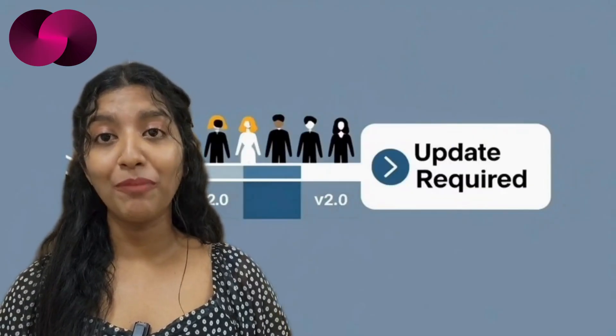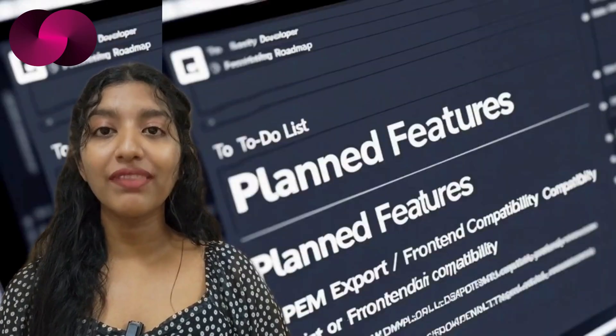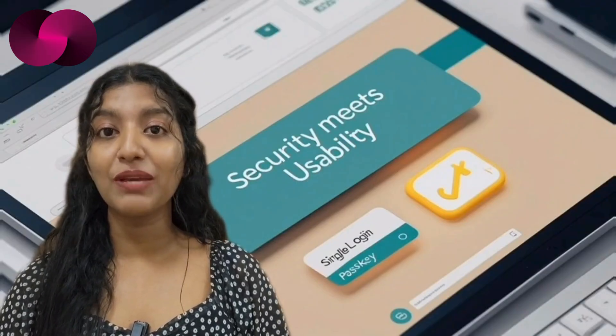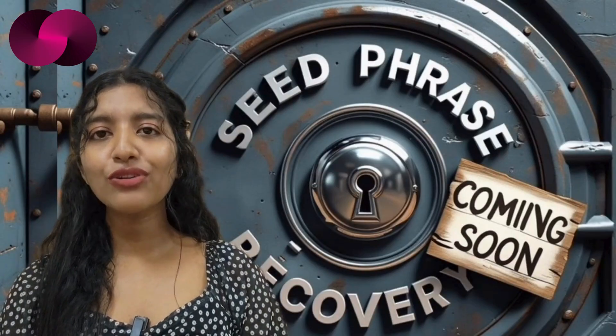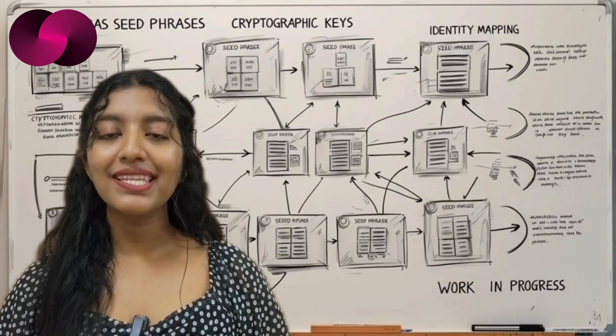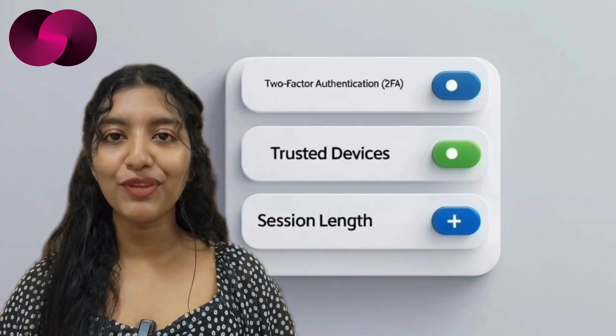Another question is about fail safes: what happens if the subnet running Internet Identity goes down — can you export your private key as a PEM file? At the moment, no, that's not supported, but it's on their radar. Seed phrases are also not yet available in Internet Identity 2.0, but the team is working on introducing them without linking to the old identity number system. There's also a two-factor authentication option in the works, expected to give users more control over their security settings.